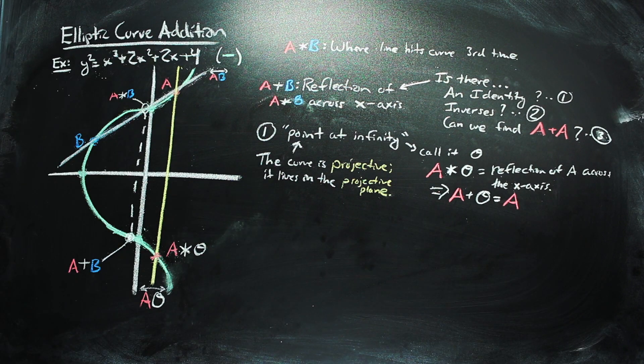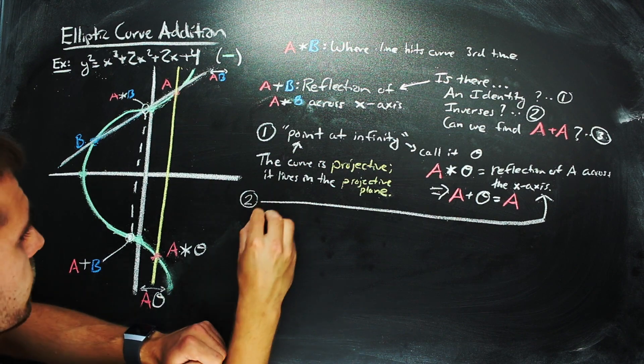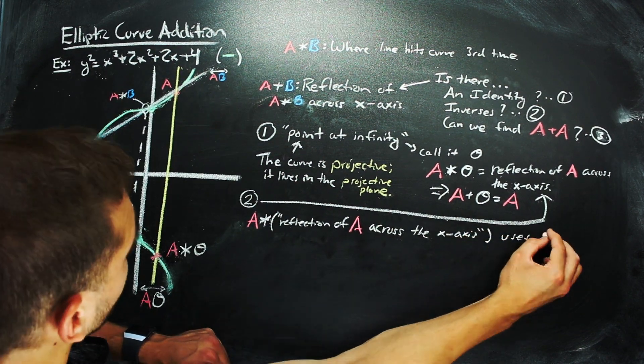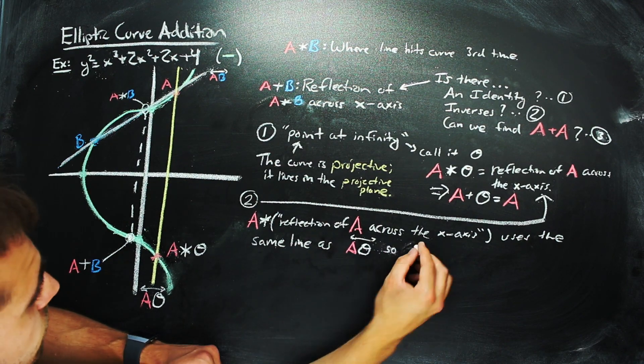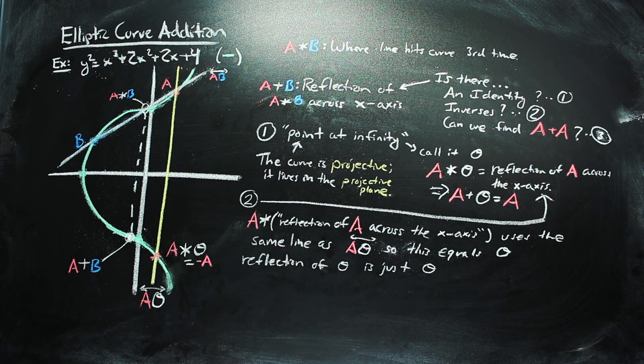Now, in order to get the point at infinity, that is, in order to find inverses, we just take the reflection across the x-axis of some point. Since this line only hits the real curve twice, it hits a third time at the point at infinity. And the reflection of the point at infinity across the x-axis is just itself.